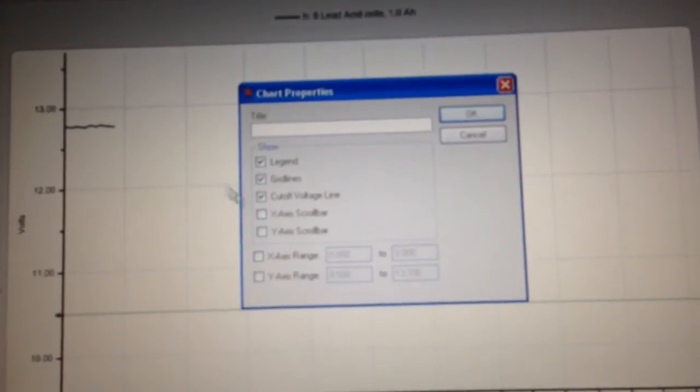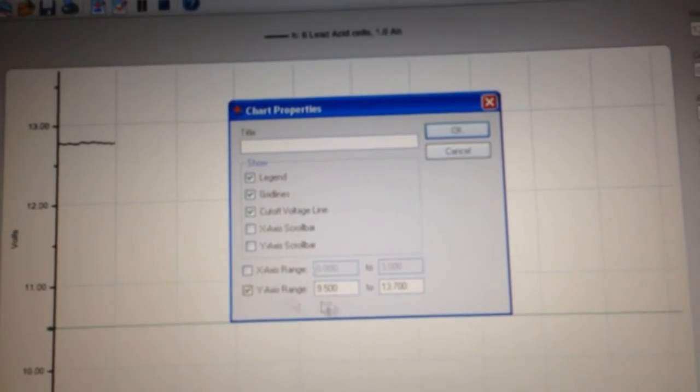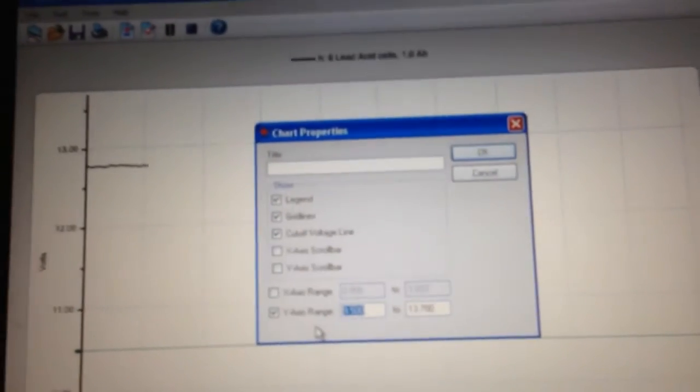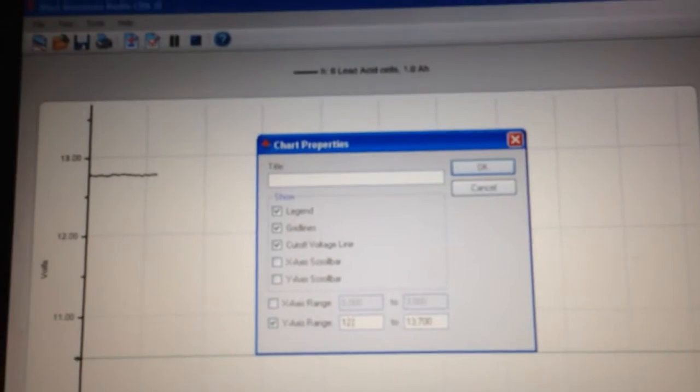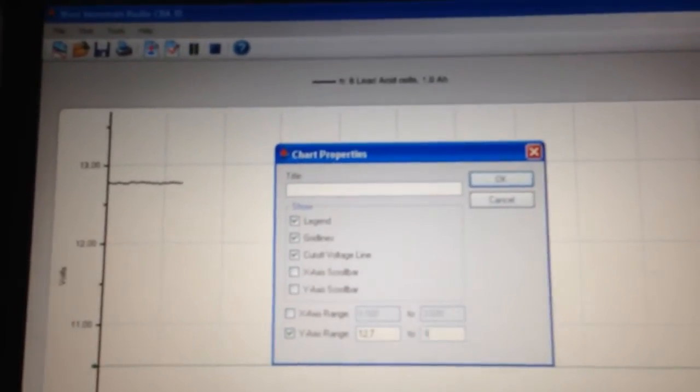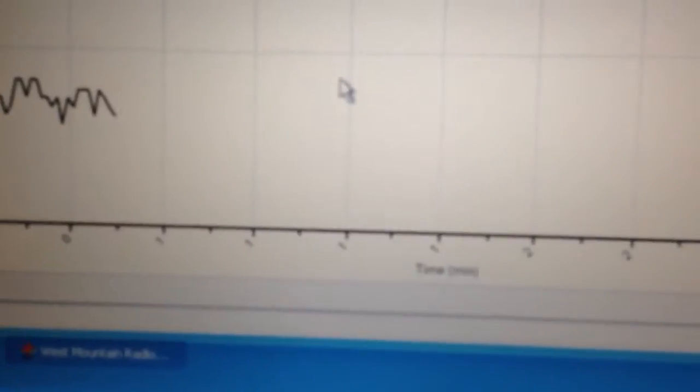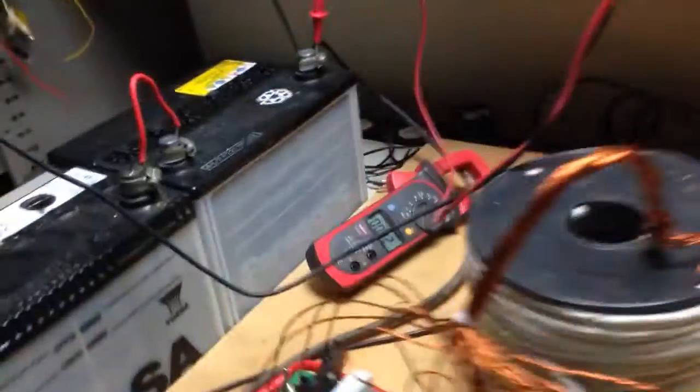I'm just going to adjust the scale on this just so it's a little bit easier to read. Let's go 12.7 to 17. Okay, so it's got minutes across the bottom, battery voltage across the top.